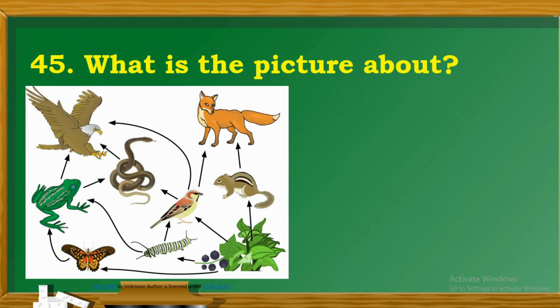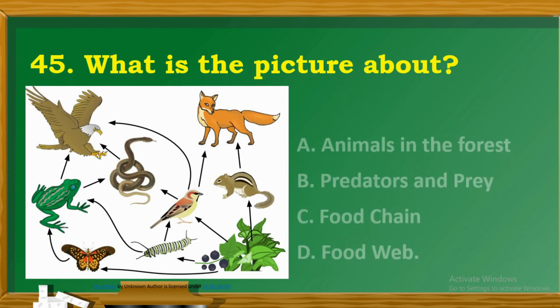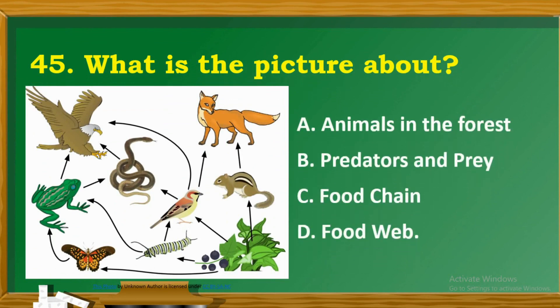Question 45: What is the picture about? A. Animals in the forest. B. Predators and prey. C. Food chain. D. Food web.